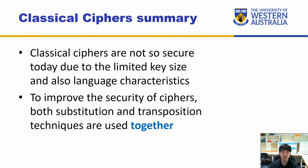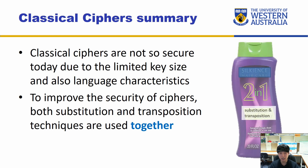In summary, classical ciphers in modern times are not secure at all — don't use them, unless you're exchanging handwritten notes that you later burn. The two main factors restricting them are limited key size and language characteristics. To improve cipher security, both substitution and transposition techniques are used together — and that's what modern ciphers are. Our next video will be moving on to modern ciphers. See you there.